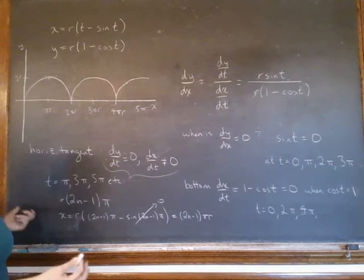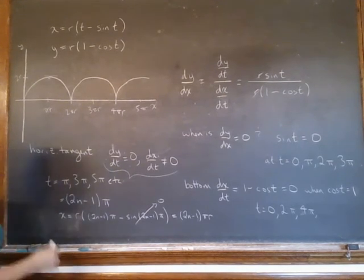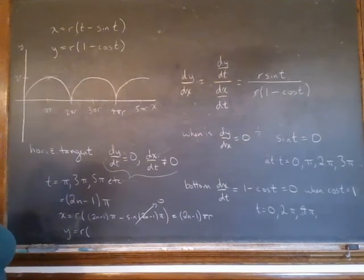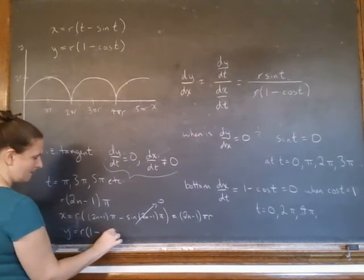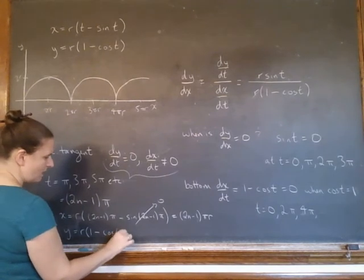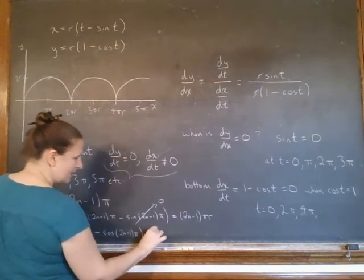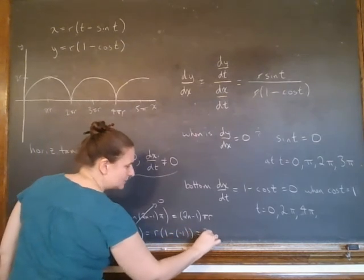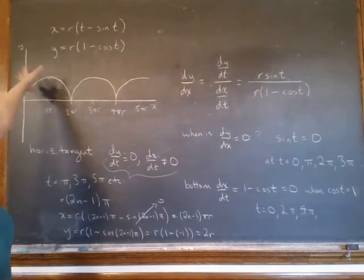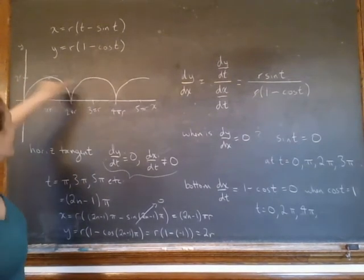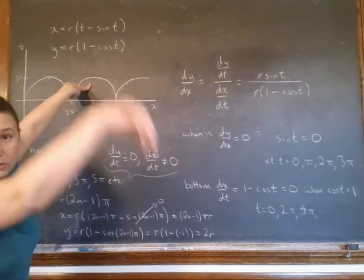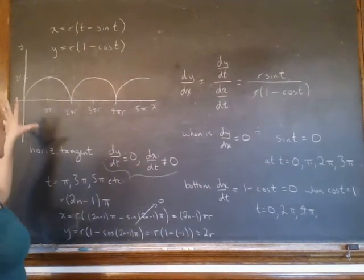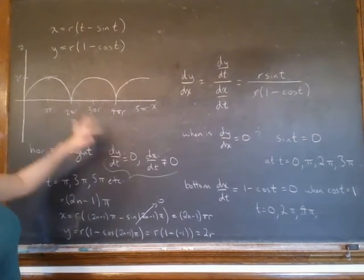Now, the y value obviously looks like it's supposed to be 2r. Hopefully you can see this, that does work out. Because I've got 1 minus cosine of an odd value of pi. So I have r times 1 minus negative 1. So indeed, I do have the 2r because at that top of the point, remember the circle is turning, and so at that top of the point, that's the top of where the circle is turning. Where that point p is at the very top. So that makes a lot of sort of intuitive sense, and the math works out really well.